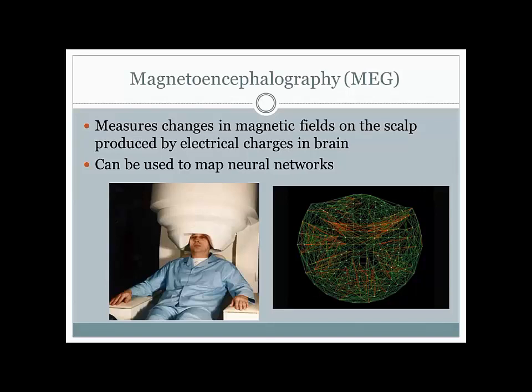To wrap up, we've talked about several different sources of neuroimaging, including some of the early advances in how we've looked at the brain—from contrast x-rays all the way up to MEG and everything in between. If you have any questions about this material, feel free to send an email or come by office hours, and I'll be happy to work with you to clear up any confusion. That's all for this time, and I'll see you in class.